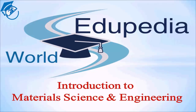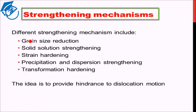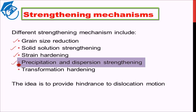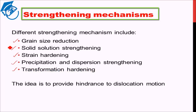So let us see the different strengthening mechanisms that are there. What we'll study in the upcoming lectures are: grain size reduction, solid solution strengthening, strain hardening, precipitation and dispersion strengthening, and transformation hardening. These are the different methods for strengthening mechanisms that are generally used and we'll see all of them to understand what each of them means.